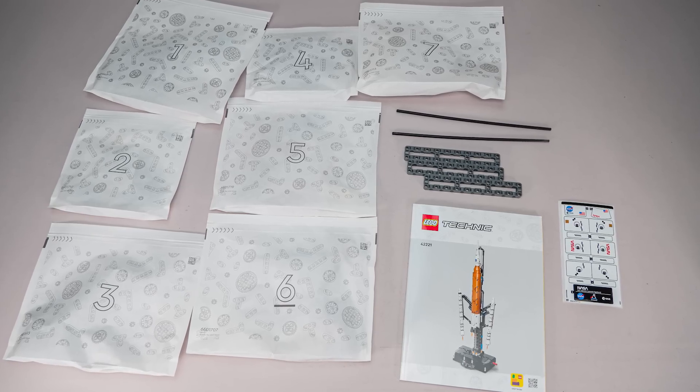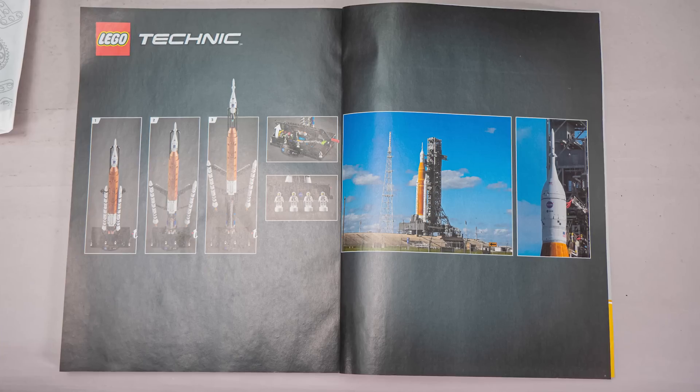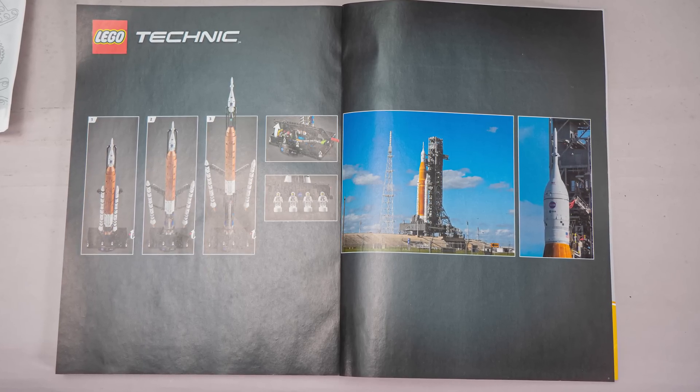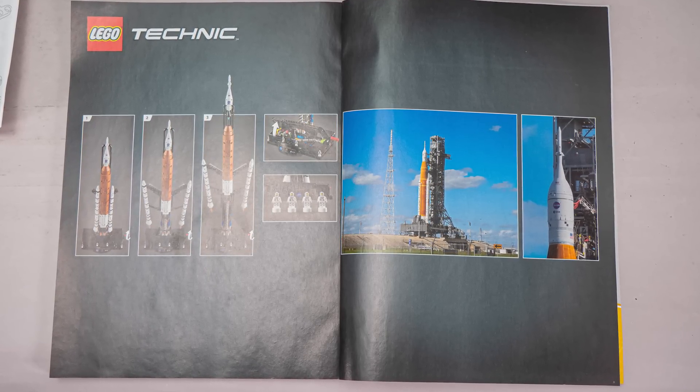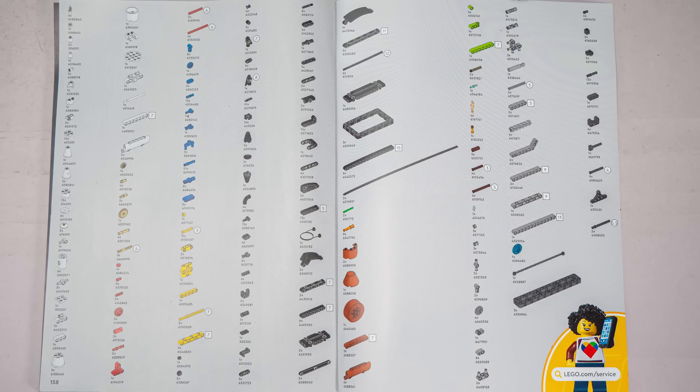Inside we get 7 numbered bags, some loose parts, the sticker sheet and the manual. Unfortunately there's only one extra page with images, it would have been nice to see more about the Artemis and the development of the LEGO model. Here's the part list if you are interested.